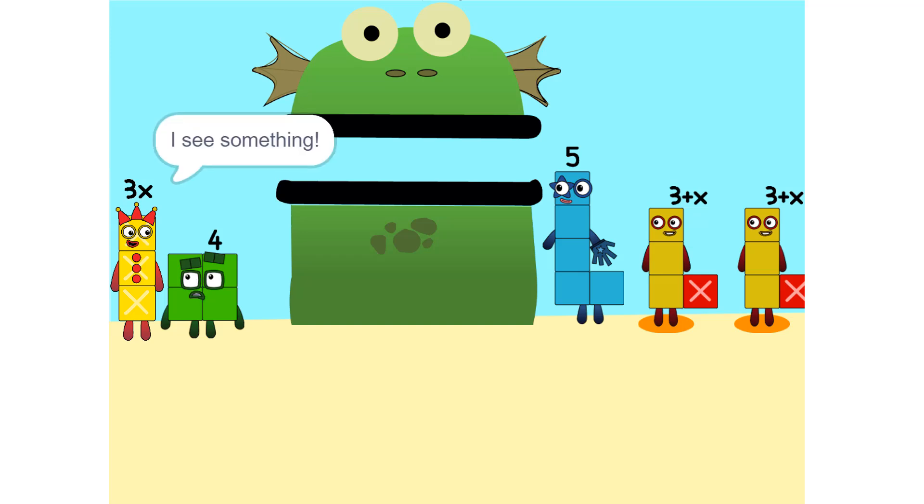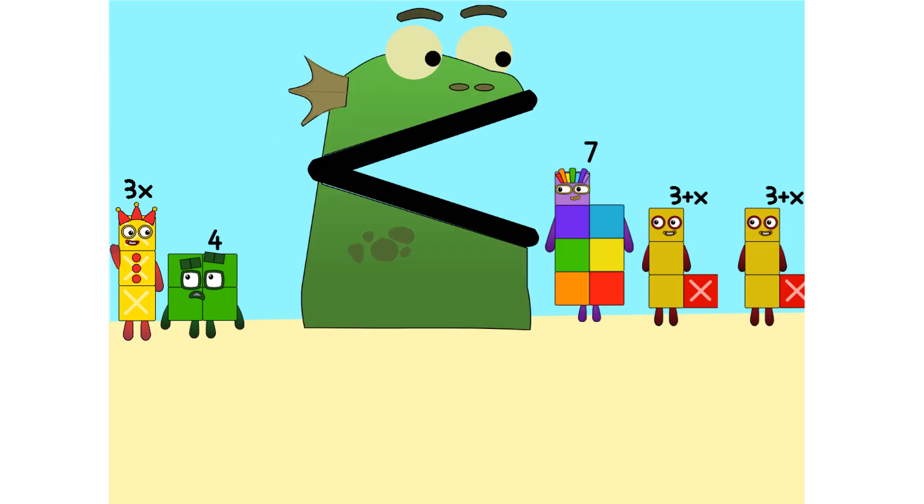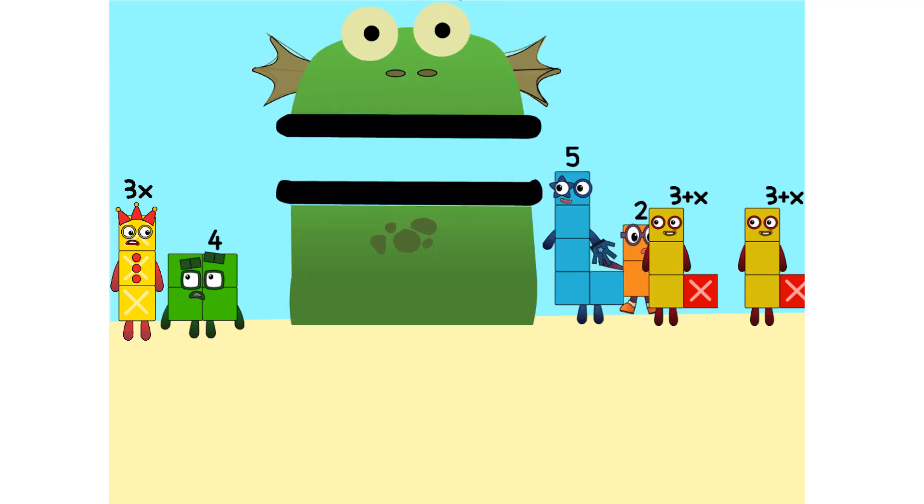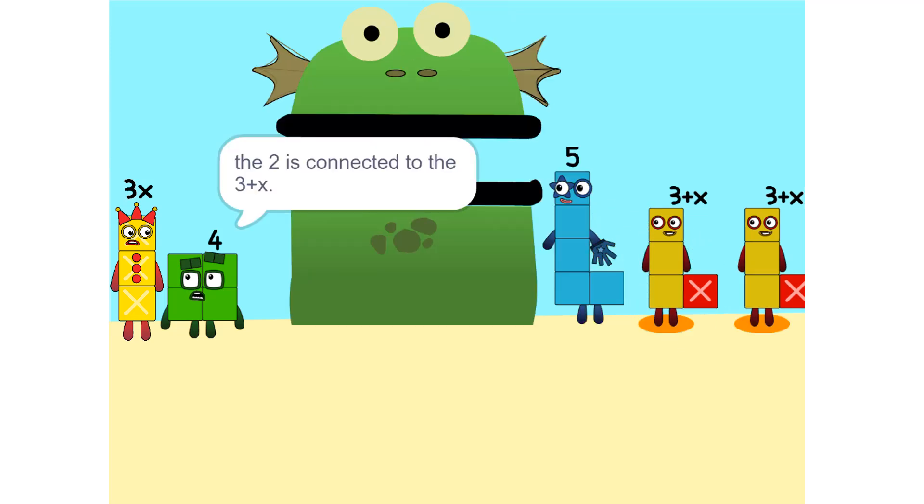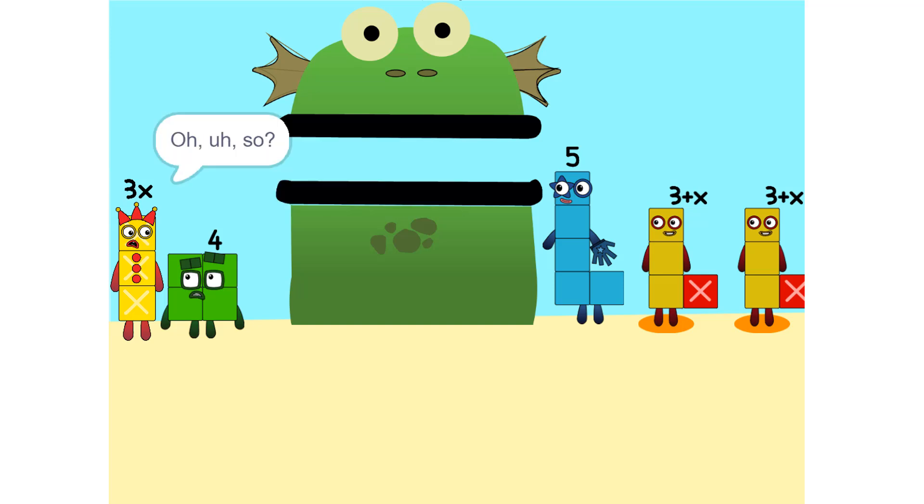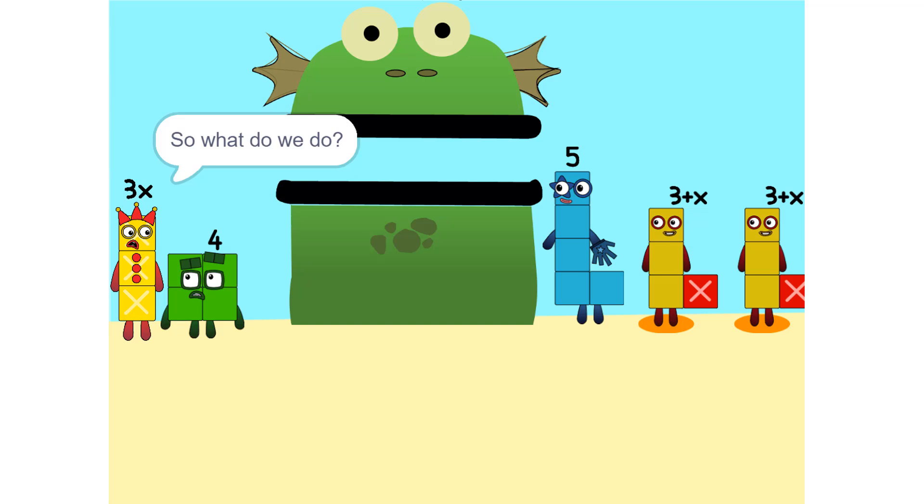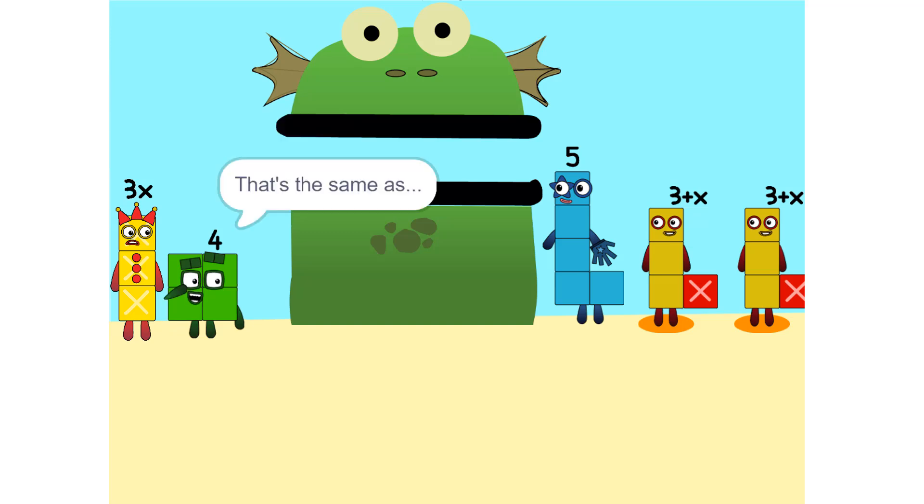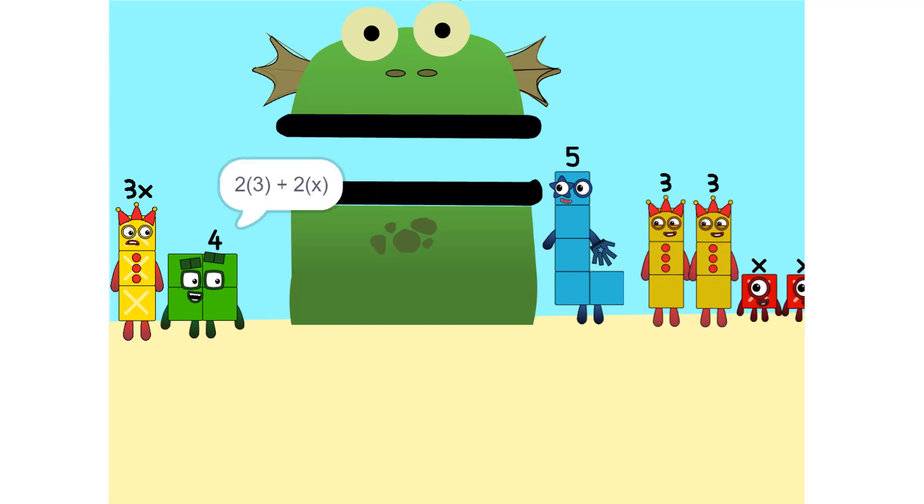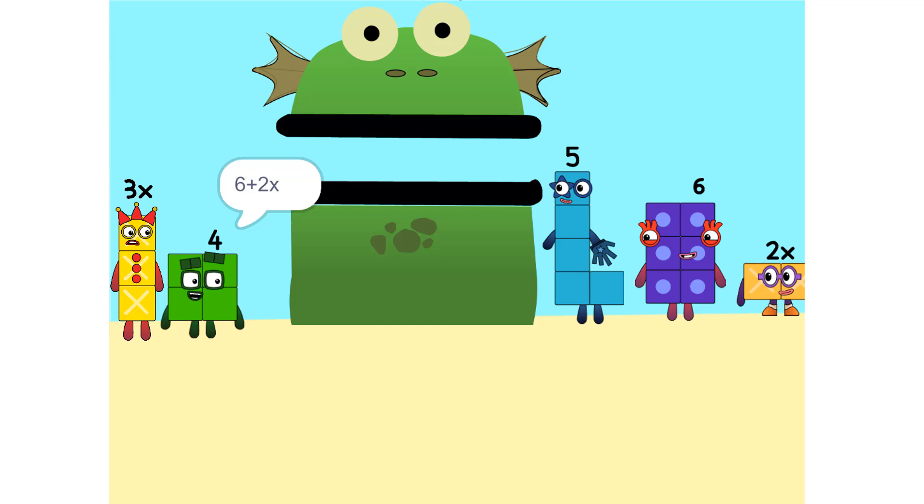I see something. We can add these. Why did that happen? Because the 2 is connected to the 3 plus X. So it's like adding apples and oranges. You can. See the 2 times 3 plus X? That's the same as 2 times 3 plus 2 times X, which is 6 plus 2X.